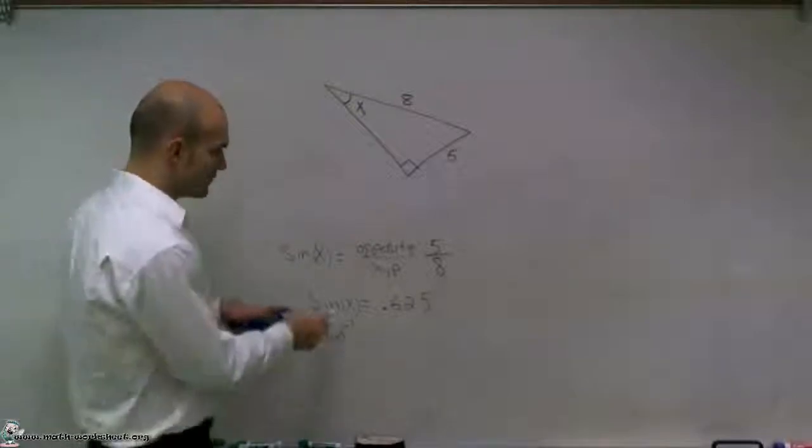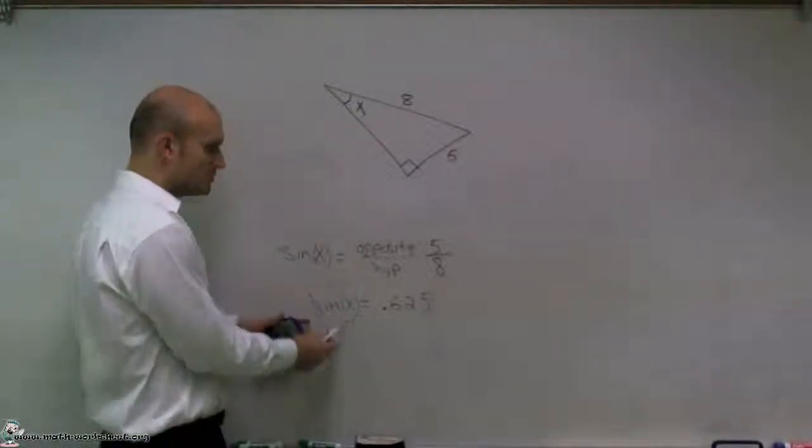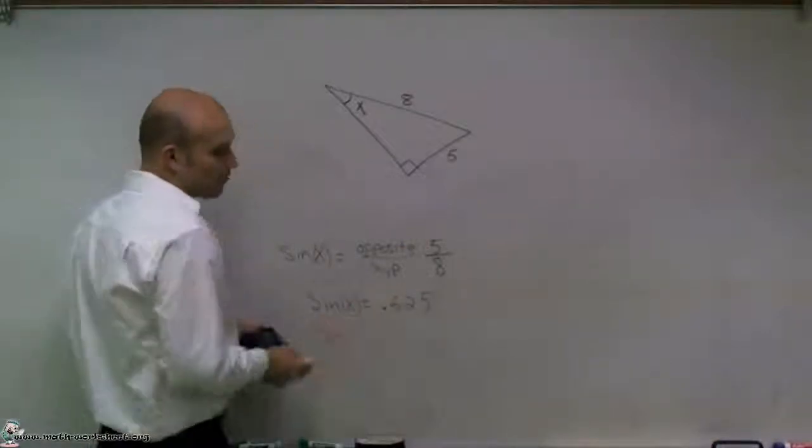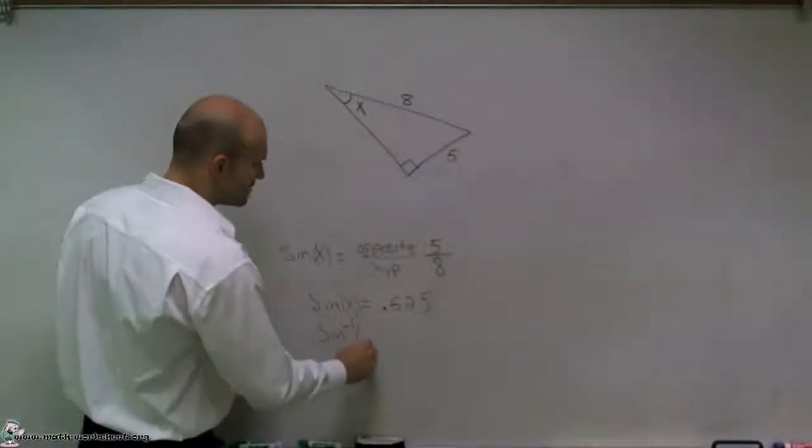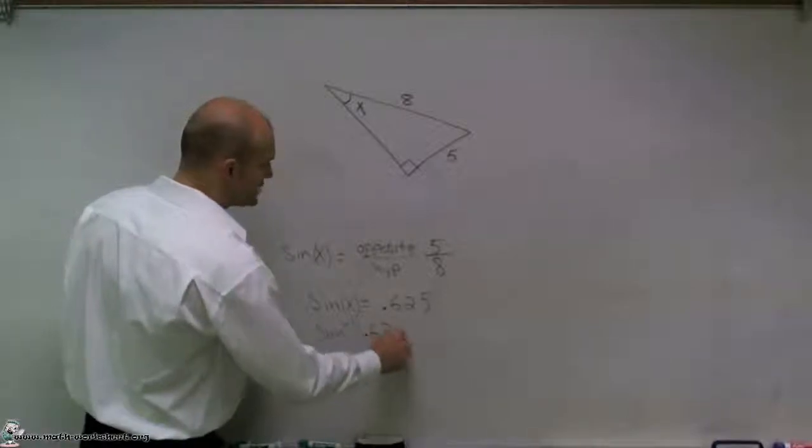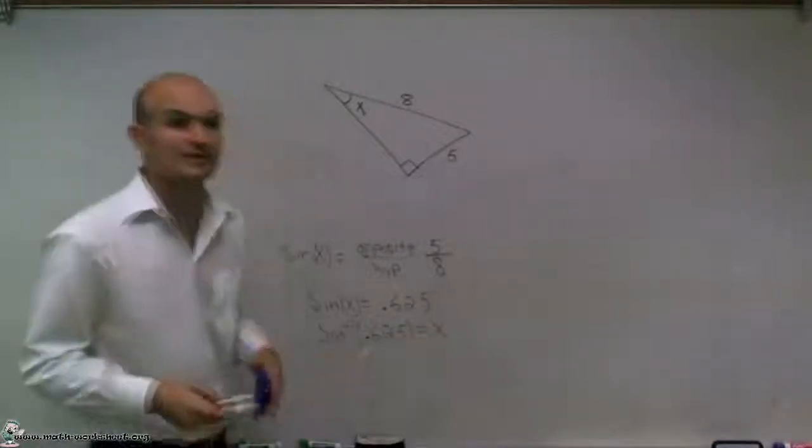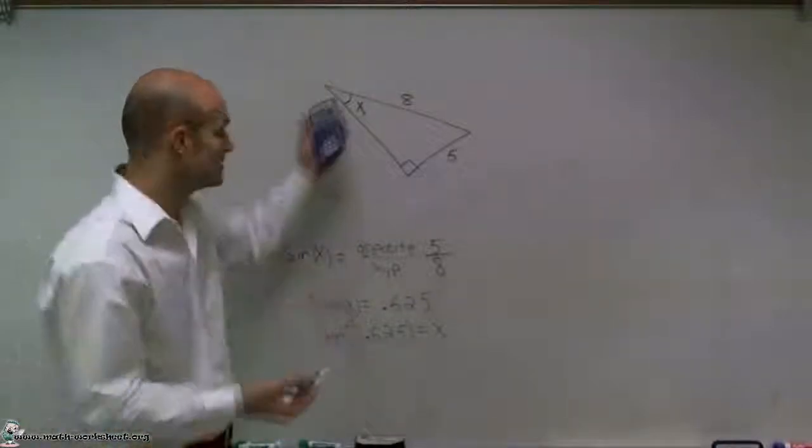So if we're going to undo sine, we want to apply the sine inverse to our value of our function, which is 0.625. So I'm going to say inverse sine of 0.625, and what that's going to give me is the value of my x, which is my missing angle.